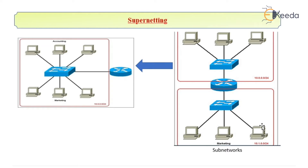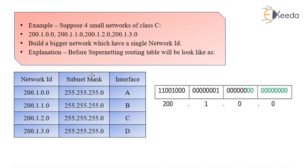Basically, if I want to combine two smaller networks into a larger one, the concept is called supernetting. For example, if I have four smaller networks of Class C with these particular IP addresses — 200.1.0.0, 200.1.1.0, 200.1.2.0, and 200.1.3.0.